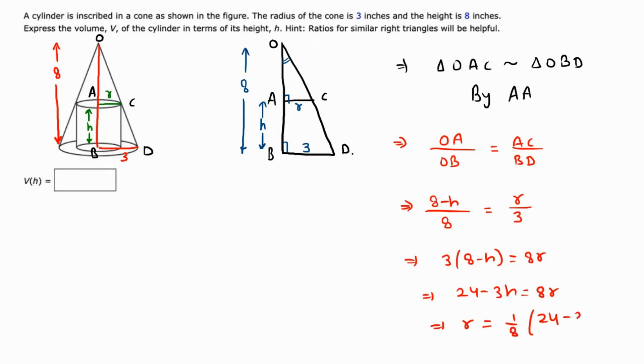This is easy now because the volume is πr²h. We already have r in terms of h, so we substitute: V = π[(24 - 3h)/8]²h.